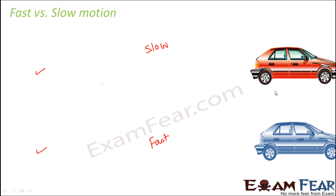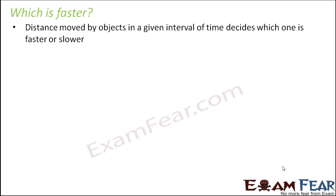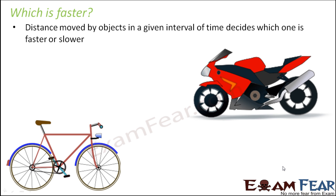The red car covered less distance in the same time, but the blue car covered more distance in the same time. The distance moved by an object in a given interval of time decides which one is faster or slower. For example, comparing a bike and a bicycle over five minutes, the bike covers more distance — showing that the bike is a faster mode of transport than the bicycle.